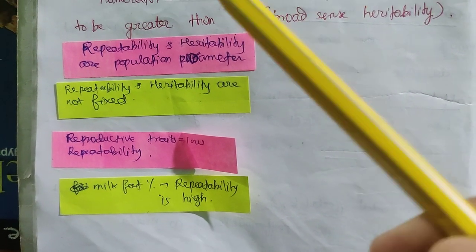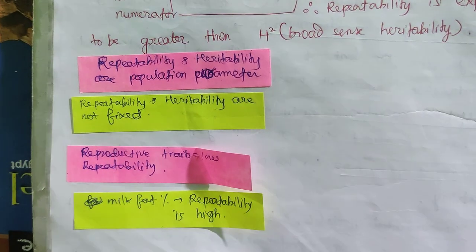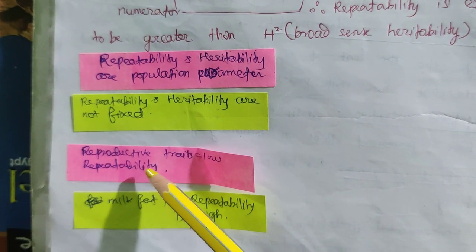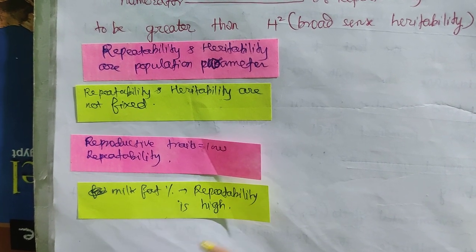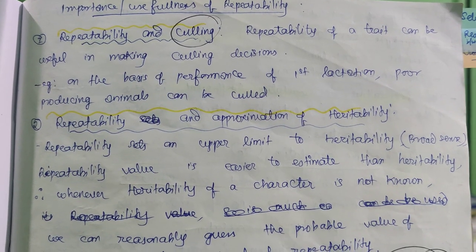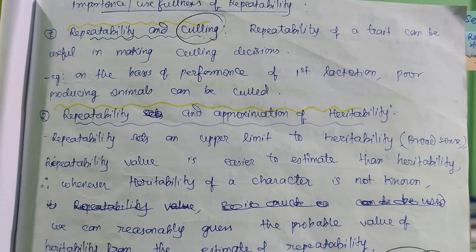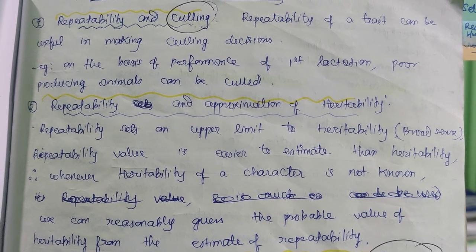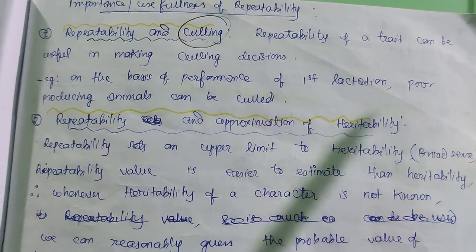Some salient features: repeatability and heritability are population parameters. Repeatability and heritability are not fixed values. Reproductive traits have low repeatability, just like their heritability. Milk fat percentage repeatability is high. Now let's look at the usefulness of repeatability. The first point is repeatability and culling — make sure you do not confuse the usefulness of heritability with that of repeatability.